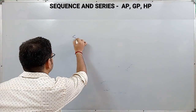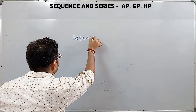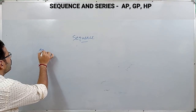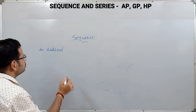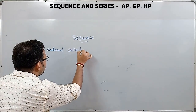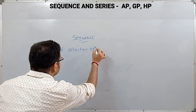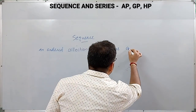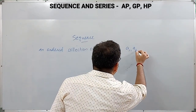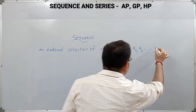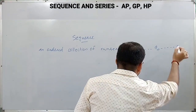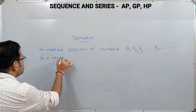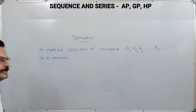First, we can discuss what is a sequence. An ordered collection of numbers, let it be A1, A2, A3, etc., An, etc., is a sequence.